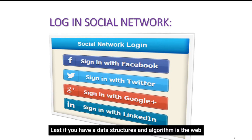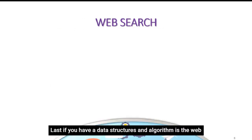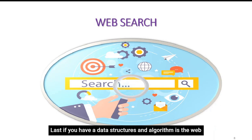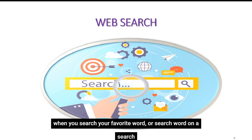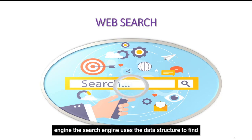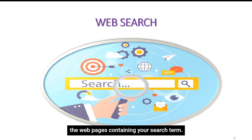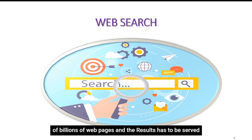Last is web search. There are millions of web pages on the internet, and when you search your favorite word or keyword on a search engine, the search engine uses data structures to find the web pages containing your search term. That's also not easy because this has to be searched out of billions of web pages and the appropriate results have to be served in front of you in a fraction of seconds.